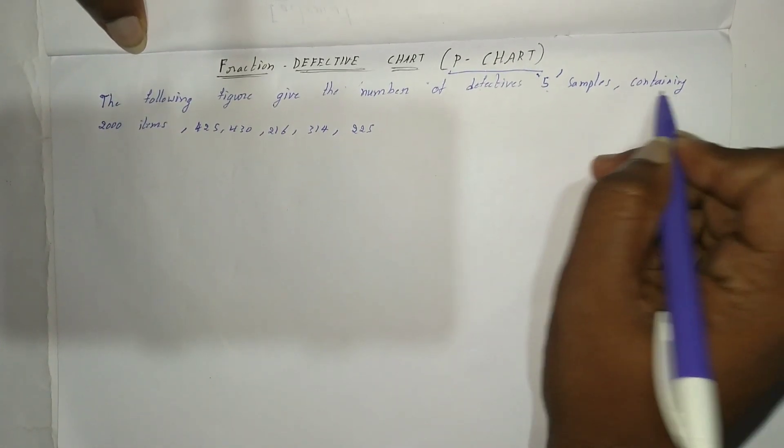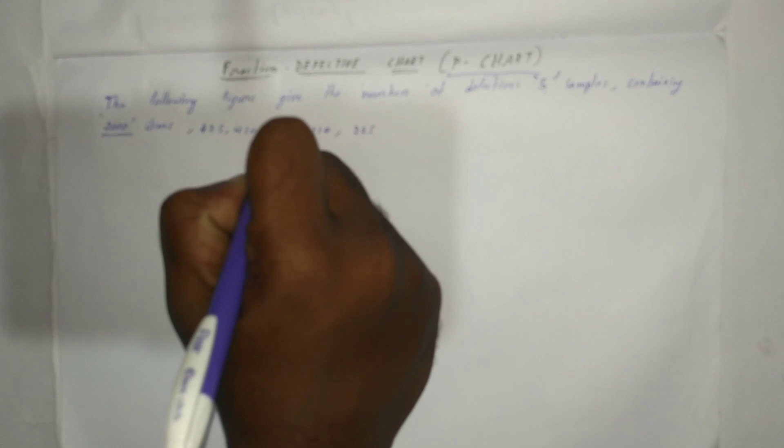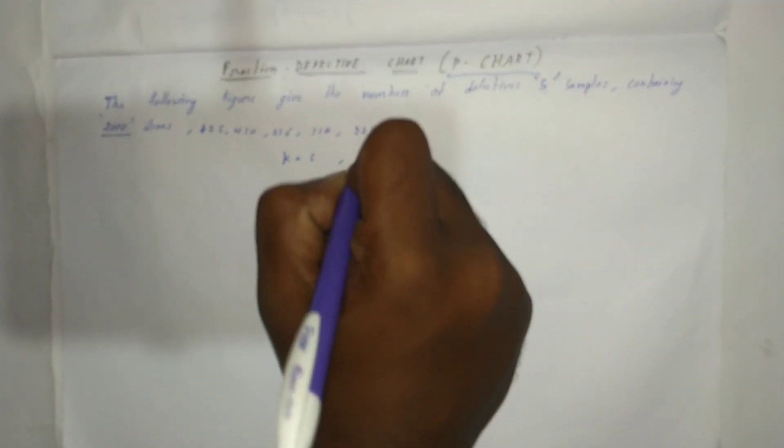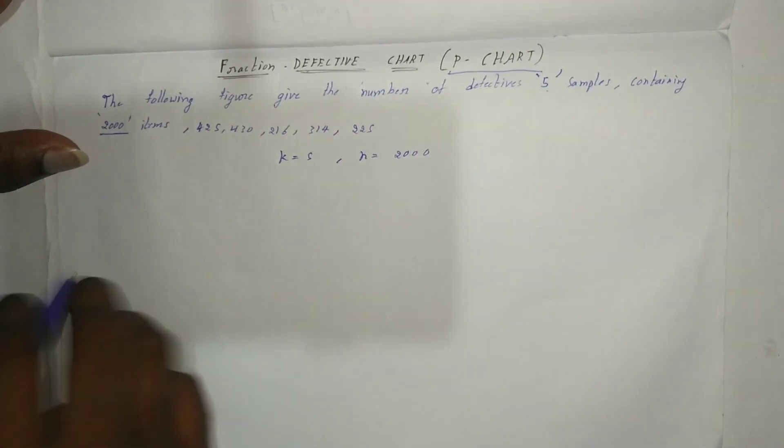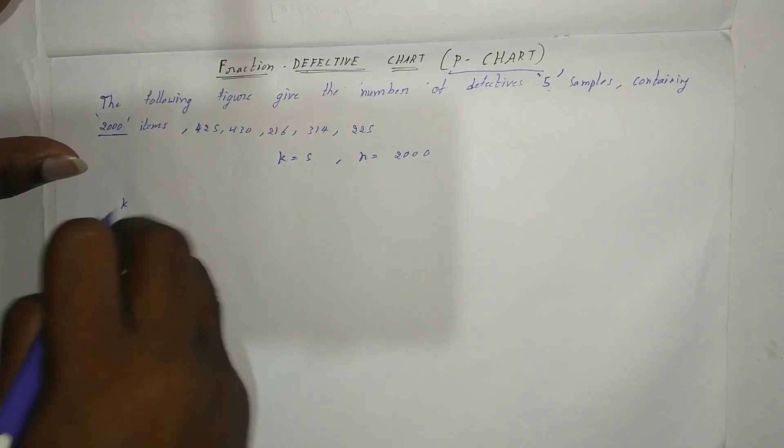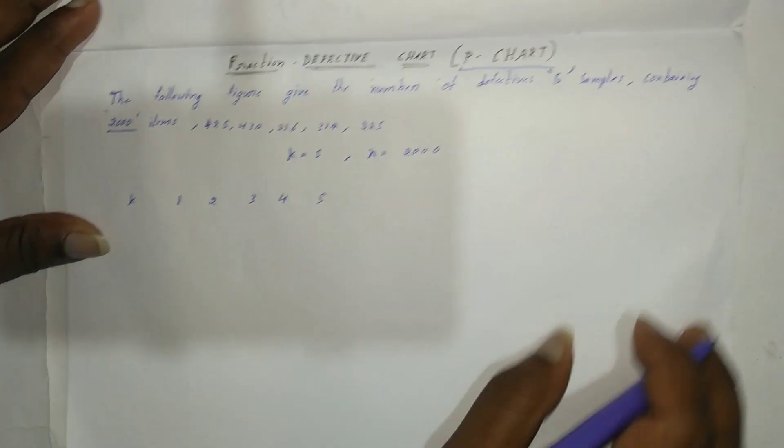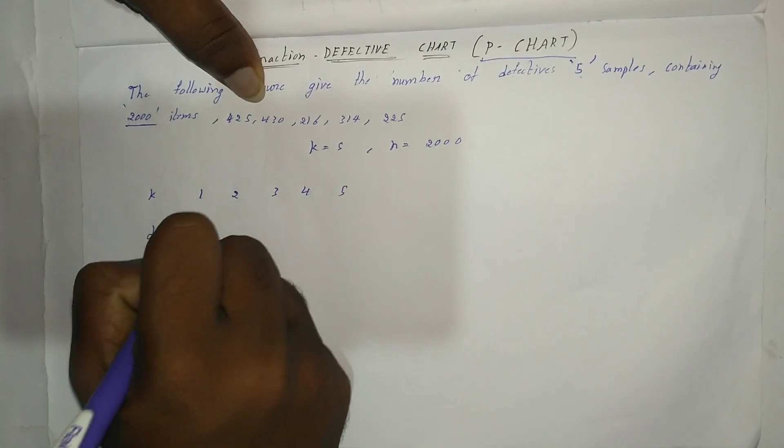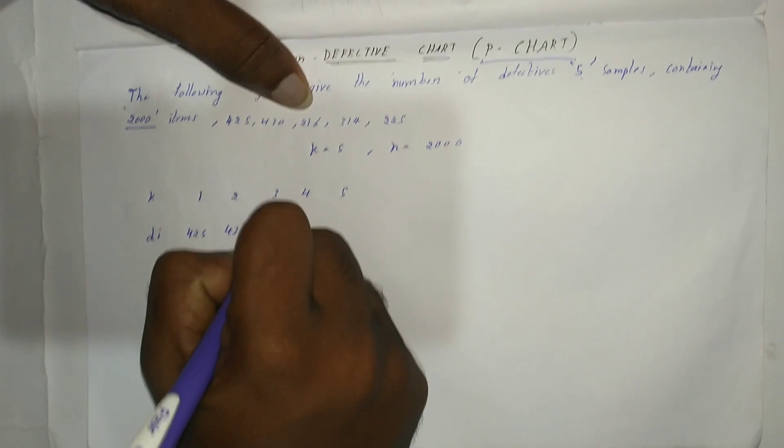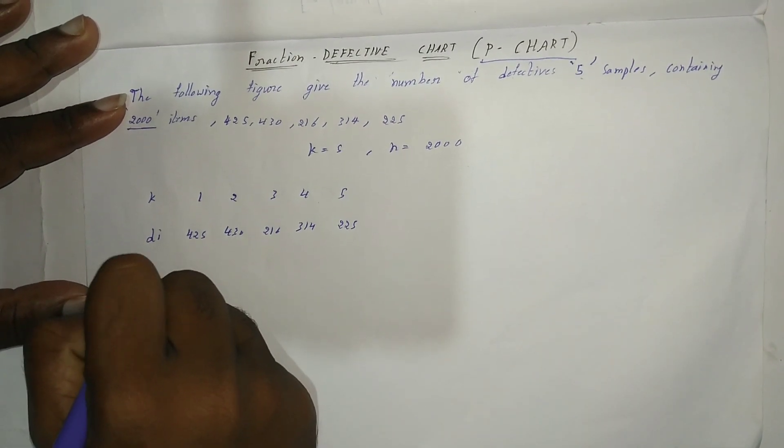These are our di values. So k equals five samples, n equals 2000. The di values are: k equals 1, 2, 3, 4, 5, and di values are 425, 430, 216, 314, 225.